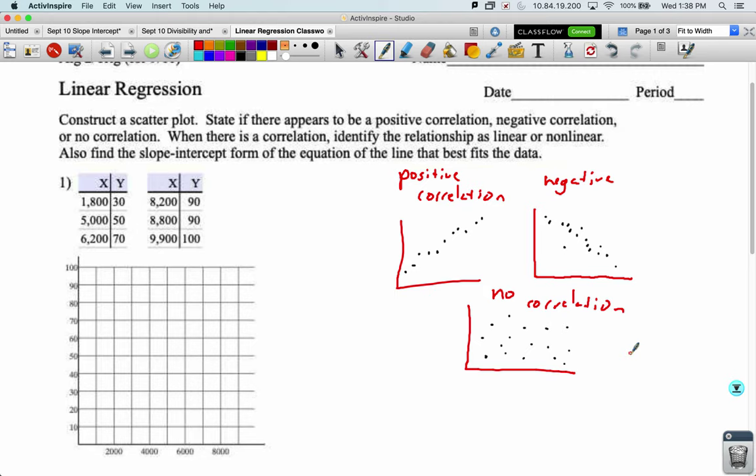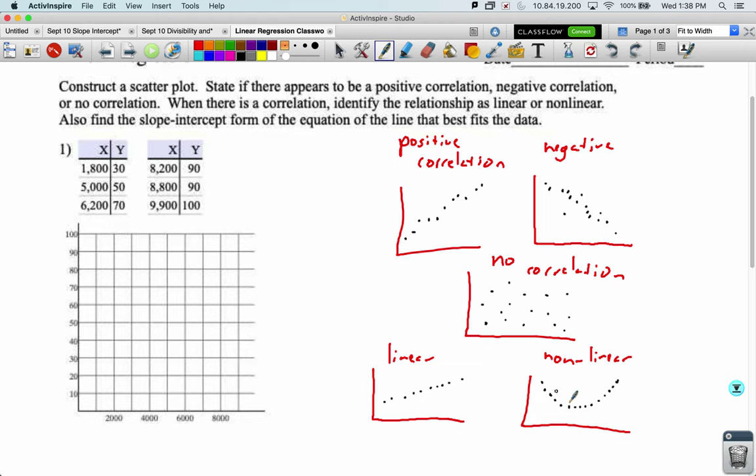And then there's no correlation. That's where the dots are kind of random. You could try and pass a line through this, but you're not going to get very close to very many dots. In order to figure that out, we do have to plot the scatterplot and try to pass a line through it. When there is a correlation, identify the relationship as linear or non-linear. So in linear, the line is straight. You can have a well-formed line that's straight, but the other option is a well-formed line that's not straight. So non-linear, I can get a line pretty close to all of these dots, maybe it makes something like a U shape. So we can still get very close to all those dots with a line, but it's not going to be a straight line.